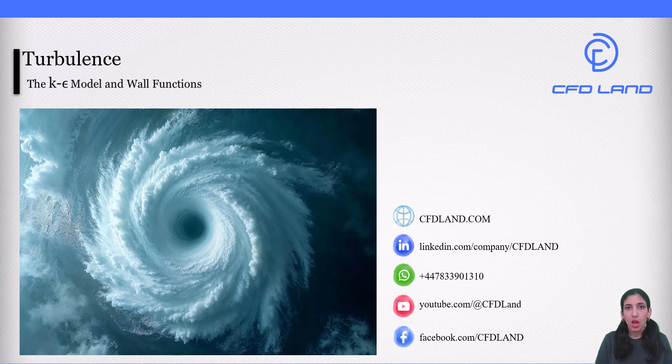In this video I will introduce the idea of turbulence modeling in computational fluid dynamics. Then we will focus on one of the most widely used models, the k-epsilon model. We will talk about what the two variables k and epsilon represent, why this model is so popular in engineering simulations, and some of its strengths and limitations. By the end of this video you will have a clear picture of how the k-epsilon model helps engineers and researchers approximate turbulence in real-world problems. Ready? So let's get started.